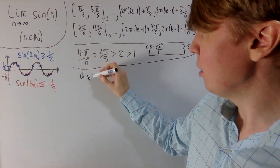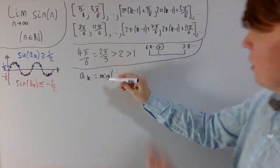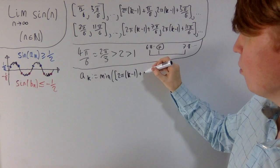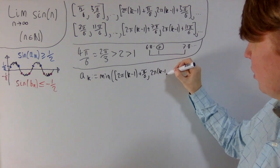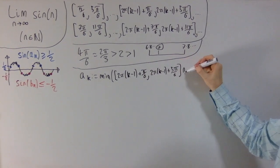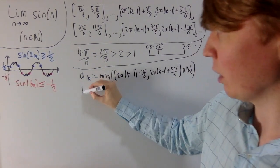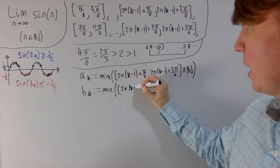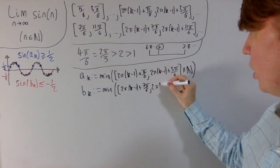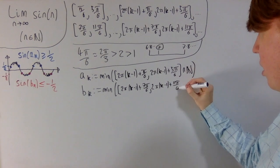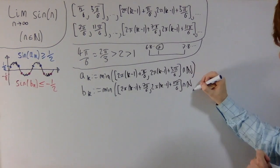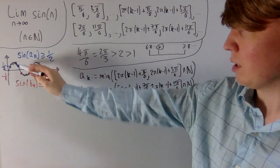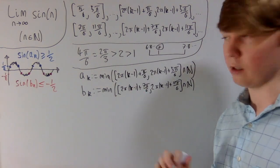We define a_k as the minimum integer in the intersection of the kth interval [2π(k−1) + π/6, 2π(k−1) + 5π/6] with the integers — taking the minimum gives us a well-defined choice. We do the exact same thing for b_k: the minimum integer in [2π(k−1) + 7π/6, 2π(k−1) + 11π/6] intersected with the integers. This is nice because we know sine of a_k is always greater than or equal to a half, and sine of b_k is always less than or equal to minus a half.